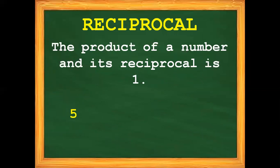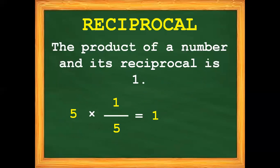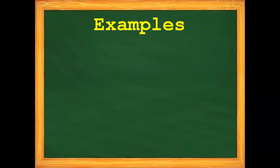For example, we have 5. 5 times its reciprocal — the reciprocal of 5 is 1 fifth. So 5 times 1 fifth, and we expect the product to be 1. Another example: 1 ninth times 9. The reciprocal of 1 ninth is 9, so when we multiply them, the product is 1.